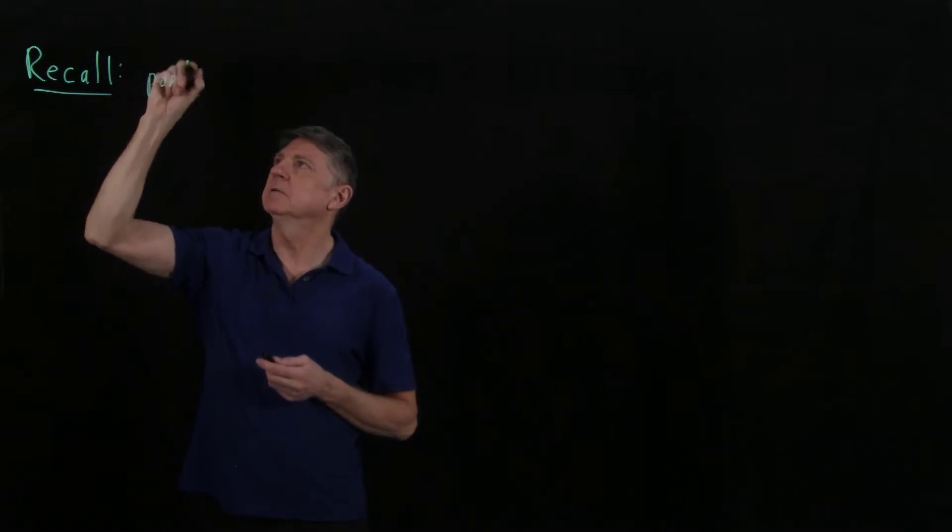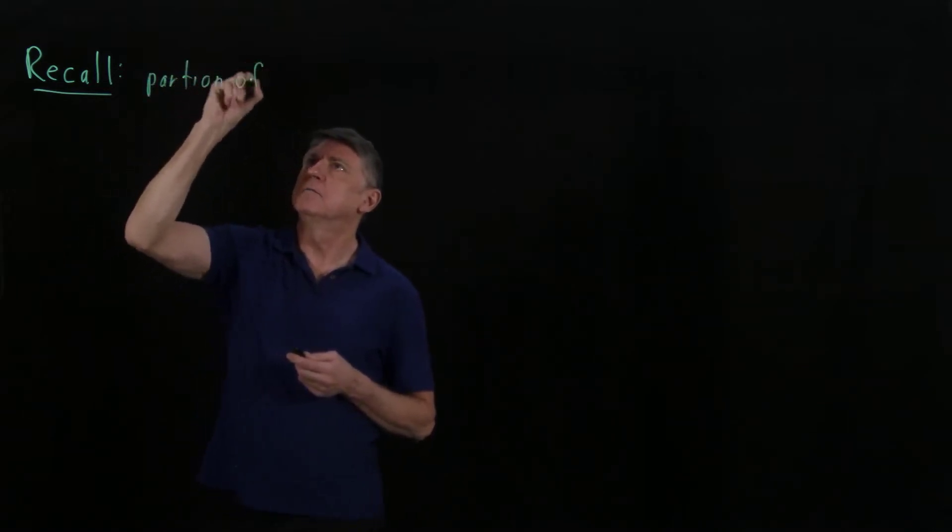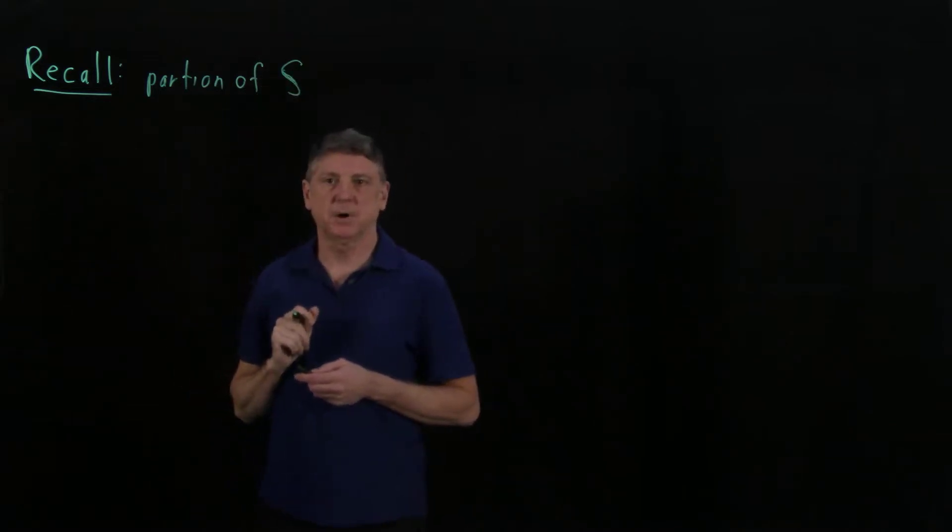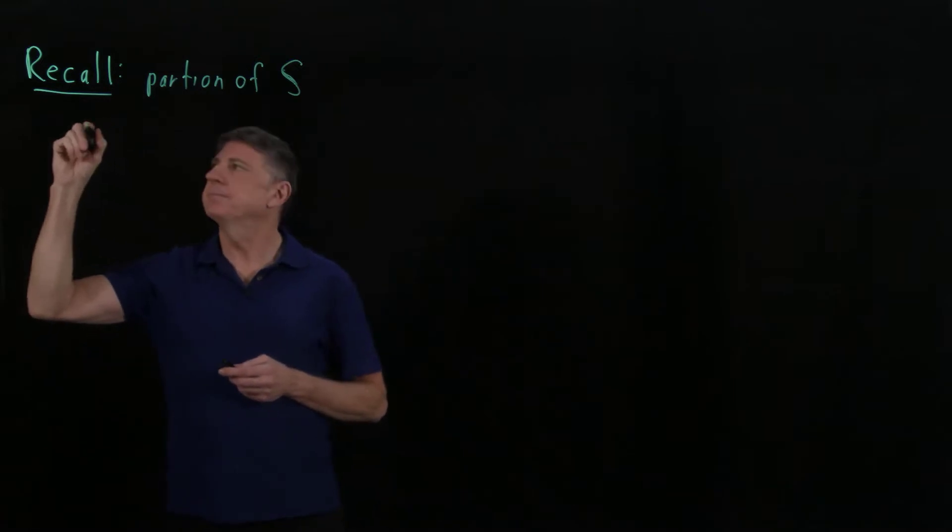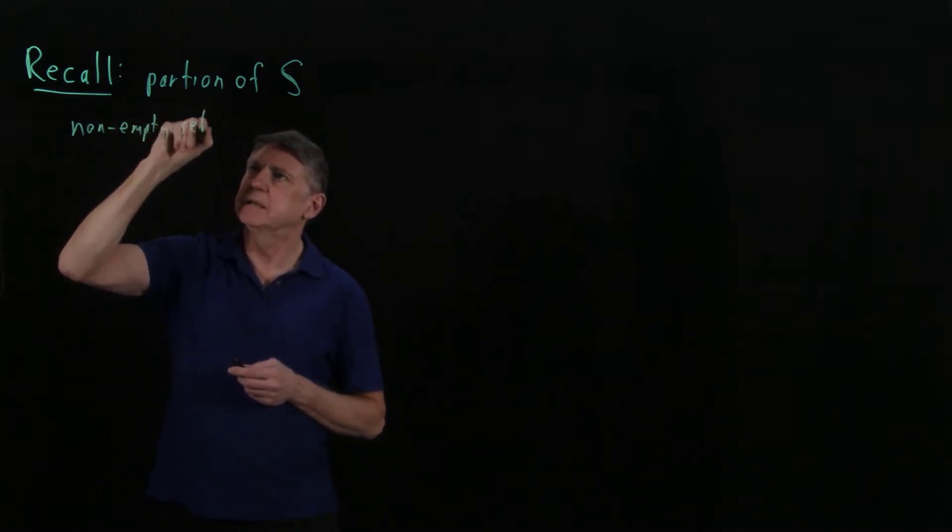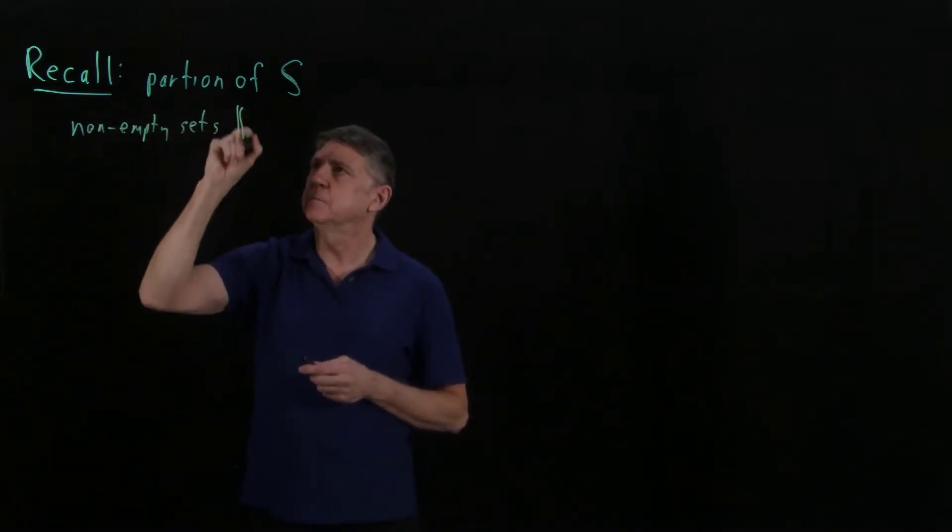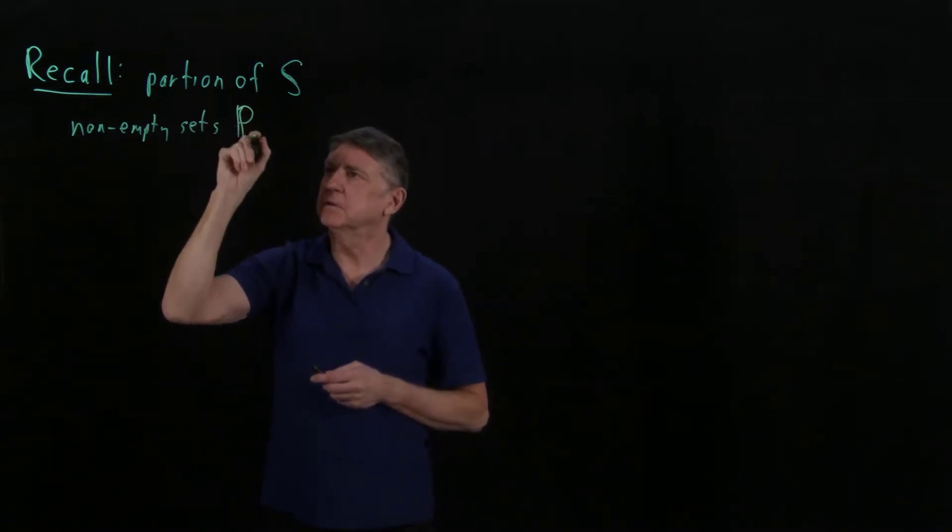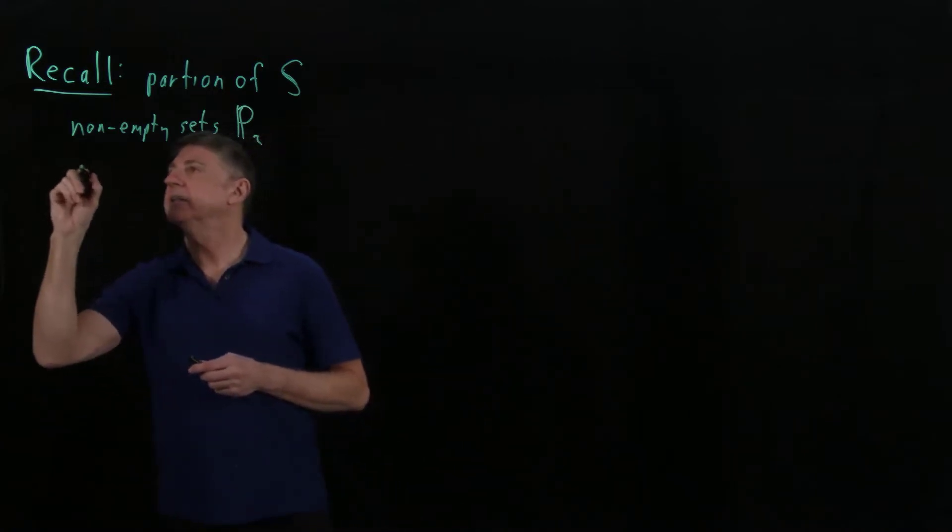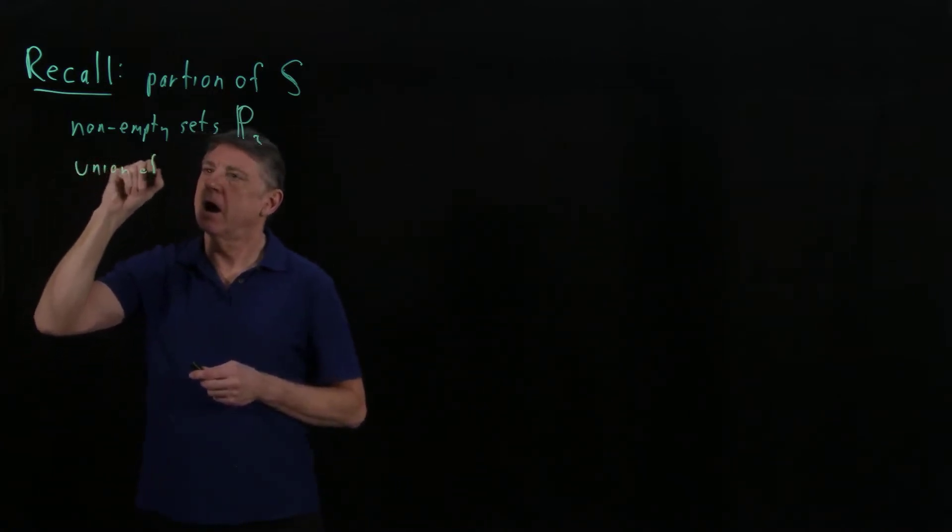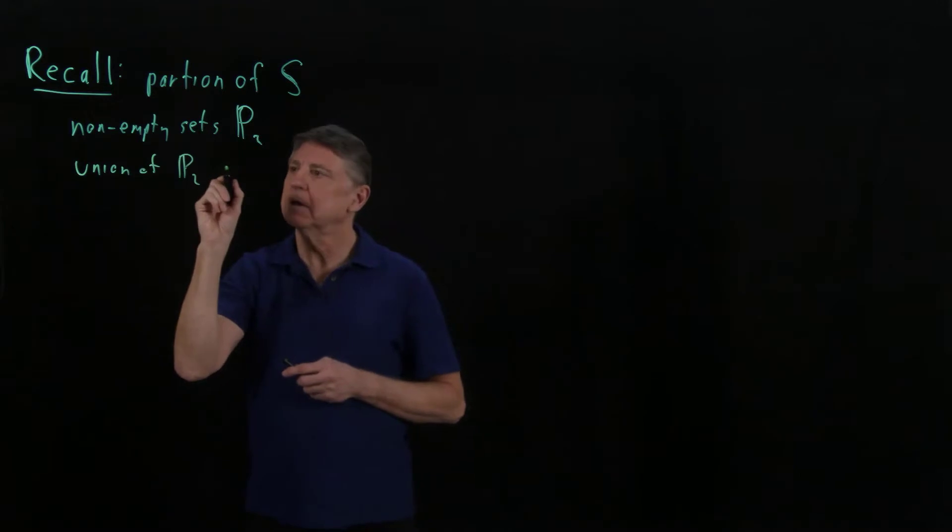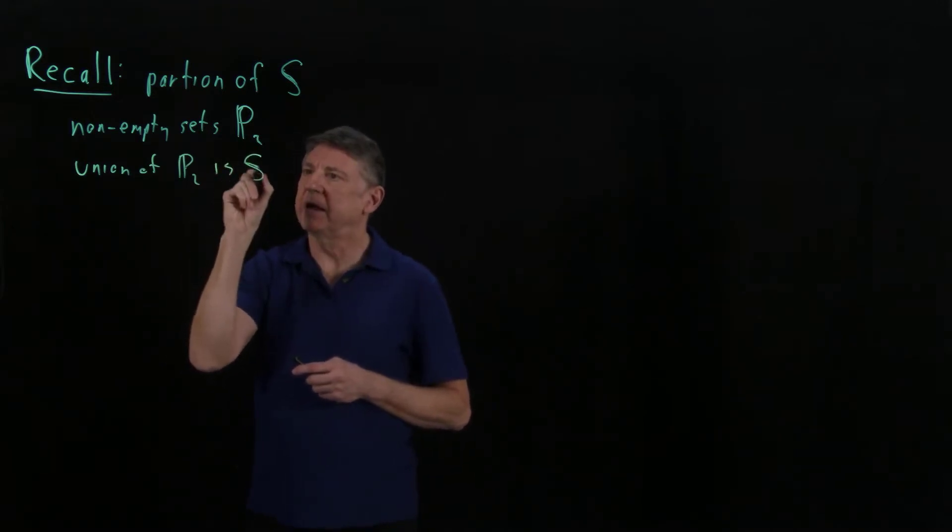And this is a partition of a set S, and I'll put a little double bar. And this is non-empty sets. And let's call these partitions Pi with a double vertical. And let's say that there are a bunch of them. And we'll say that the union of all of the partitions has to be our set.